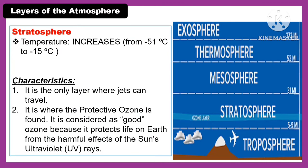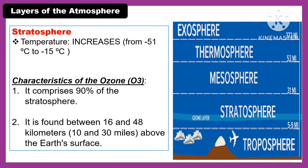The second layer of the Earth is the stratosphere. The temperature in the stratosphere increases from negative 51 degrees Celsius to negative 15 degrees Celsius. Its characteristics are: it is the only layer where jets can travel, and it is where the protective ozone is found. It is considered good ozone because it protects life on Earth from the harmful effects of the sun's ultraviolet rays. The ozone layer comprises 90% of the stratosphere and is found between 16 and 48 kilometers, or 10 and 30 miles, above the Earth's surface.